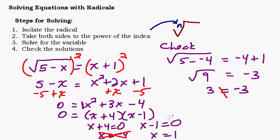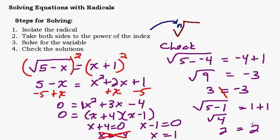Let's check x equals 1. Square root of 5 minus 1 equals 1 plus 1. That's the square root of 4, which is 2, and on the right-hand side, 1 plus 1 is also 2. So x equals 1 is our valid solution. This is why you need to check both answers — when you end up with an x squared and two solutions, one of them often does not make the original equation true. This is our first video on solving equations with radicals; the next will show more complicated examples.